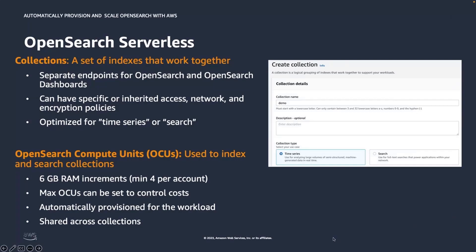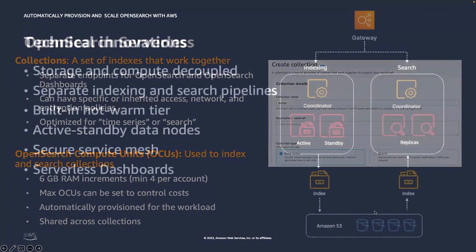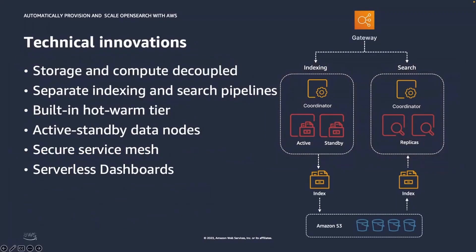Let me dive deeper into the technical innovation behind OpenSearch Serverless. Traditional OpenSearch clusters have a single set of instances that perform both indexing and search operations, and index storage is tightly coupled with compute capacity. In contrast, OpenSearch Serverless uses a cloud-native architecture that separates the indexing components from the search components, with Amazon S3 as the primary data storage for indices. This decoupled architecture lets you scale search and indexing functions independently of each other and independently of the indexed data in S3.